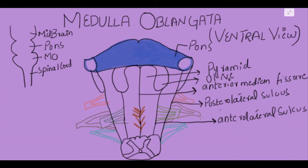Another landmark we can see on both sides is the inferior cerebellar peduncle, which connects the medulla oblongata to the cerebellum. It is located laterally, beyond the olive.